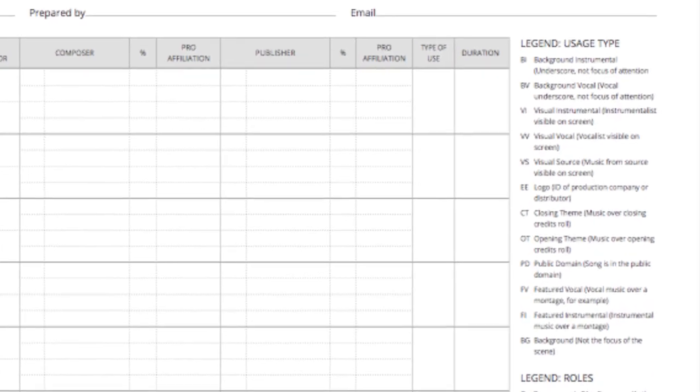Was it a background instrumental? Was it a background vocal? Was it a visual instrumental? Was it a featured vocal? Was it an opening or closing theme? These all specify usage type. So once they determine that type, the corresponding abbreviation would then go in for type of use and then the duration.